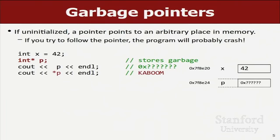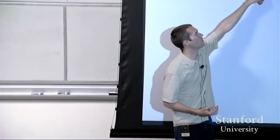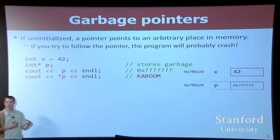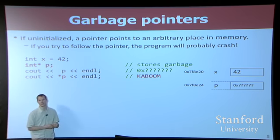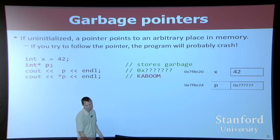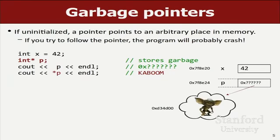You can have a pointer that points at nothing or points at bad stuff. If you declare a pointer and don't set it to point at anything, in C++ if you don't initialize a variable, it's given some garbage random value. So p is pointing somewhere, we don't know where in memory. If I say print it, it'll tell me where that is. But if I say print what p is pointing at, it could be pointing at anything - any program, any piece of memory anywhere. If I try to go there, that could crash my program or just print garbage. It's unpredictable, undefined behavior. It's a garbage, uninitialized pointer. In my slide, it's pointing at a gremlin.